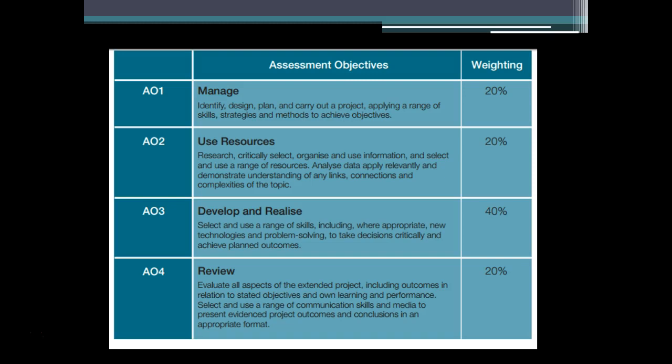AO3 is the 'develop and realise' section — this is problem solving, decision making, and so on. A lot of that will come from your production log. AO4 is where you evaluate all aspects of the extended project at the end, and that also takes into account your presentation. So you can see there are a lot of different skills being assessed — it's a combination of the actual piece itself, the research, and the production log, which is actually key.